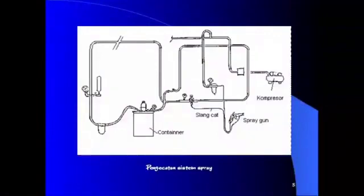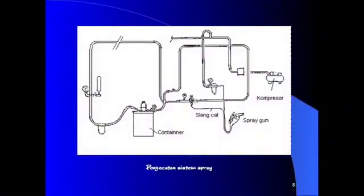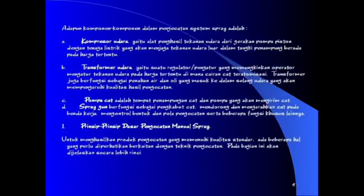Pada gambar terdapat komponen peralatan pengecatan sistem spray, yaitu kontainer, spray gun, selang cat, dan kompresor. Peralatan utama yang digunakan adalah kompresor, selang cat, spray gun, dan juga kontainer.